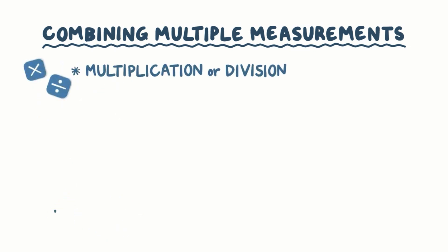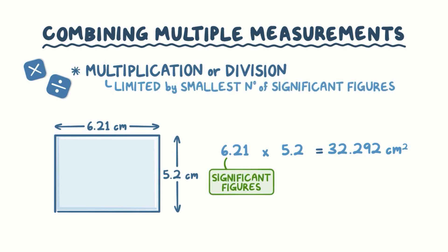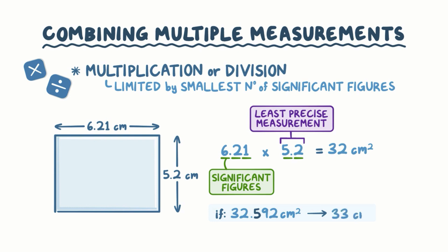Let's start with multiplication or division. Suppose you're trying to find the area of a rectangle, and one side measures 6.21 cm, and another side measures 5.2 cm. Then, to find the area, we multiply those two numbers together, and we get 32.292 cm squared. When multiplying or dividing, you're limited in significant figures by the smallest number of significant figures. From our measurements, 6.21 cm has three significant figures, but 5.2 cm has only two significant figures, so you're limited to two significant figures by 5.2 cm, because that's your least precise measurement. So, our answer should be rounded to two significant figures. In this situation, 32.292 cm squared rounds to 32 cm squared. Now if the answer had been 32.592, then we'd round that up to 33 cm squared.